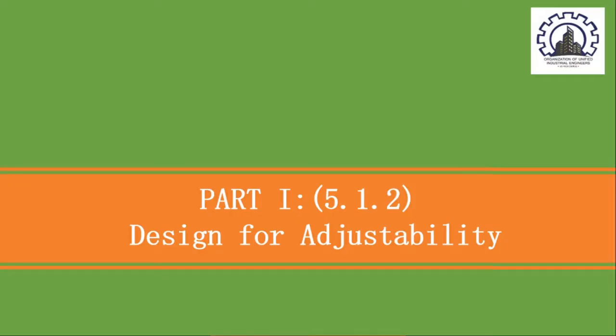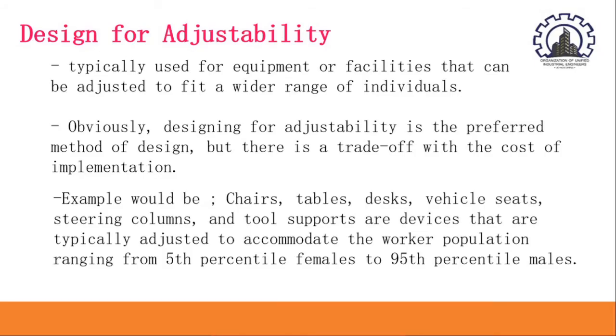Next up is design for adjustability. It is typically used for equipment or facilities that can be adjusted to fit a wider range of individuals. It ensures the workstation fits the worker and recognizes uniqueness to every worker or employee to meet their individual needs. And designing for adjustability is the preferred method of design, but since it is adjustable, it is quite expensive for the implementation of it. Example would be chairs, table, desk, vehicle seats, steering columns, and tool supports are devices that are typically adjusted to accommodate the worker population, ranging from 5th percentile females to 95th percentile males.